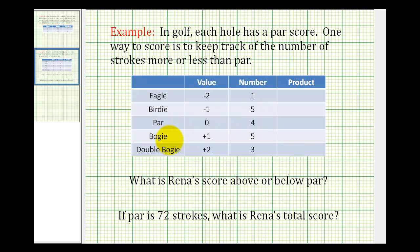A bogey would be one stroke above par, so a bogey has a value of a positive one or plus one, and she had five of those.